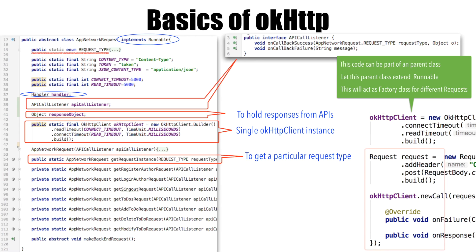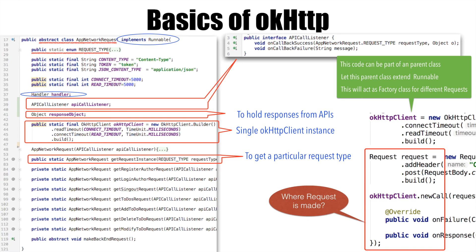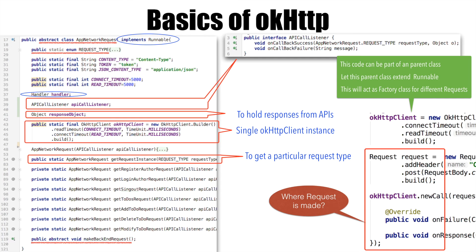But where are we building the request object, and where are we actually calling the API? Well, if you pay attention, AppNetworkRequest is an abstract class because it has an abstract method called makeBackendRequest. We will be implementing another class which will be extending this AppNetworkRequest, and that is where you will see the actual code to construct the request object and make an API call.